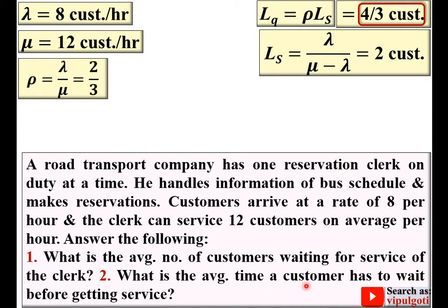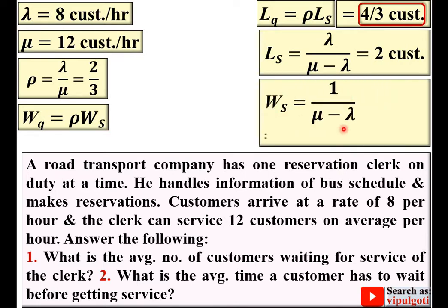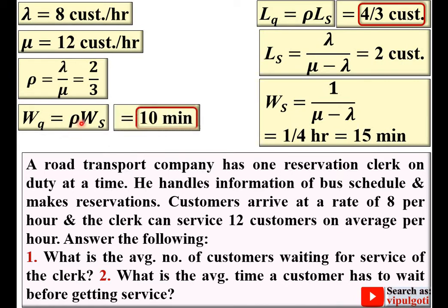The second question asks for the average time a customer has to wait before getting service — that is the waiting time in the queue, Wq. First find Ws = 1 / (mu − lambda) = 1/4 hour. Since lambda and mu are in hours, multiplying by 60 gives Ws = 15 minutes. Then Wq = rho × Ws = (2/3) × 15 = 10 minutes. That is the second answer.